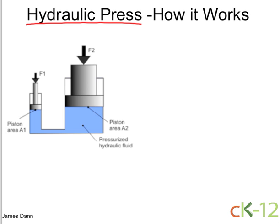A hydraulic press works like this. You have some input force, which is labeled F1, and this is the force applied to the hydraulic press. And then you have an output force labeled F2, and this is the force that comes out on the other side — the force that lifts your car.